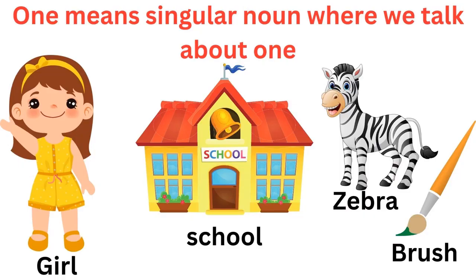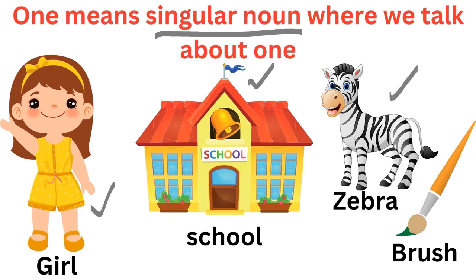One means a singular noun. Nouns kya hota hai? Name of a place, person, animal or a thing — yeh nouns hota hai. Like girl, school, zebra, brush — these are the nouns. But singular nouns kya hota hai? Jo single hota hai, jo one hota hai. One in number hota hai, unko hum kya bolte hai? Singular nouns. For example, one girl, one school, one zebra, one brush — each and everything is one in number. So this is the singular.